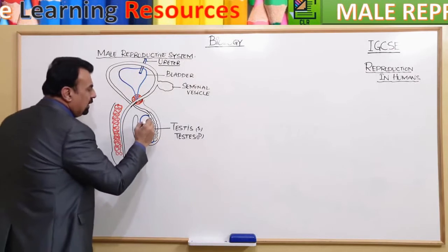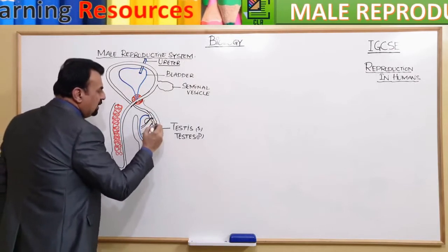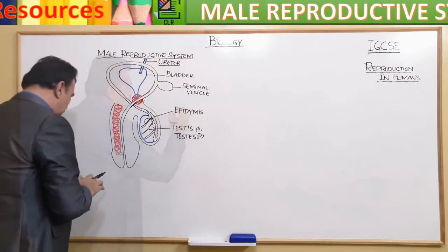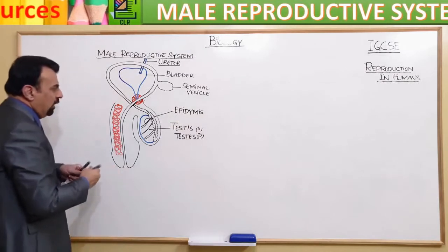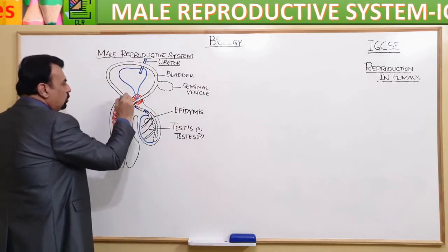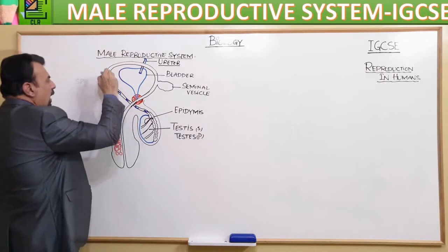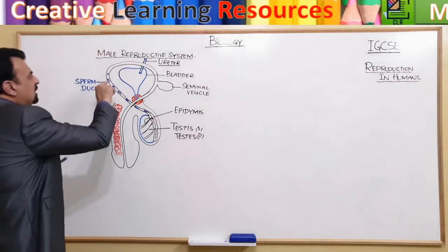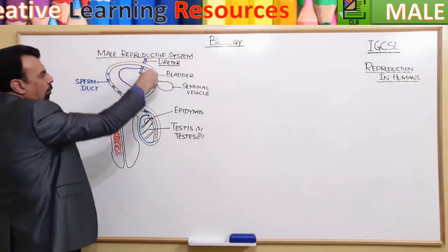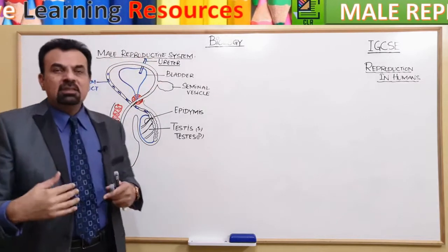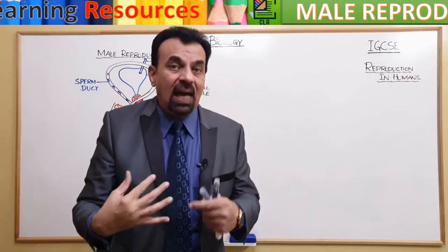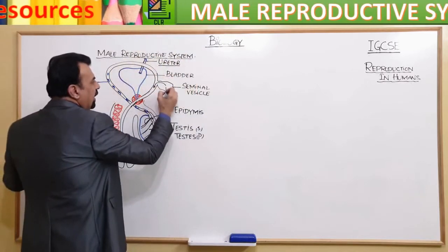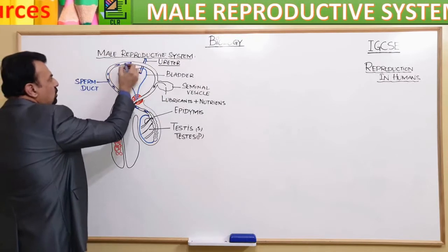After the production of sperms, they are stored inside this structure — these small tubules are called the epididymis. Then the sperms continue their journey, traveling through this tube called the sperm duct. Sperms keep moving through this tube all the way up and then reach the seminal vesicle, where the secretion from the seminal vesicle — including lubricants — is added.